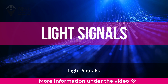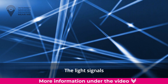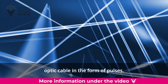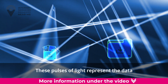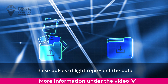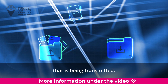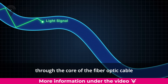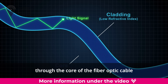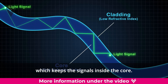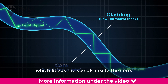Light signals are sent through the fiber optic cable in the form of pulses. These pulses of light represent the data that is being transmitted. The light signals travel through the core of the fiber optic cable and bounce off the cladding layer, which keeps the signals inside the core.